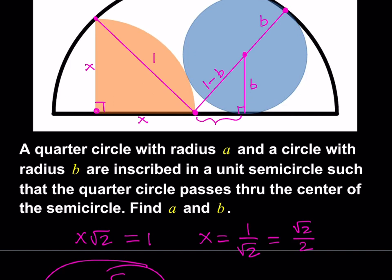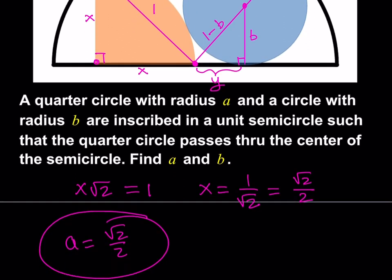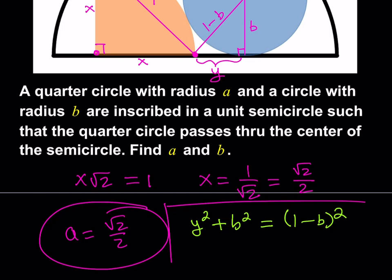Let's call that y. How do you find y? By using the Pythagorean theorem. We can write y squared plus b squared equals 1 minus b quantity squared. By using this equation, I can get y in terms of b. But is that enough to solve for b? We need another equation, and we're going to do that in the next step. Let's solve for y first.